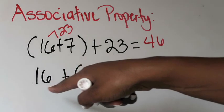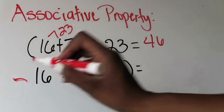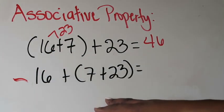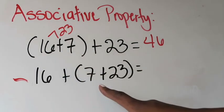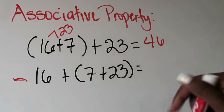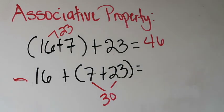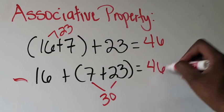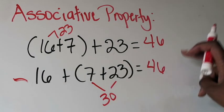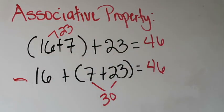But if I wanted to change my addends and group them differently, and therefore add them differently, I would still get the same sum. So you should notice here, my addends are in a different order, and I've grouped them differently. Here, I grouped 16 plus seven, but in this one, I'm grouping seven plus 23. So if I do seven plus 23, I know that that's going to be 30. And if I add 16 to that, I know that 30 plus 16 is going to be 46. Notice that I still get the same sum, even though I changed the grouping of my addends, and therefore change the order.